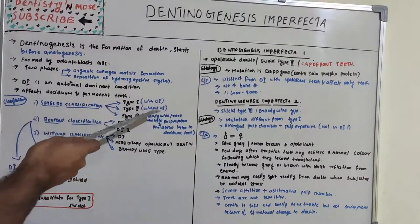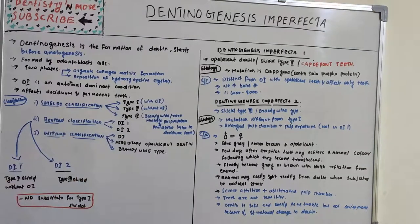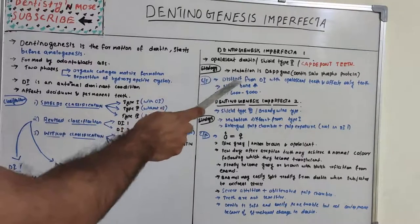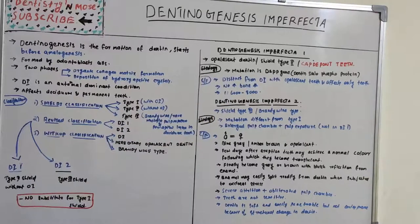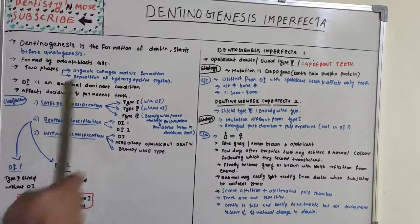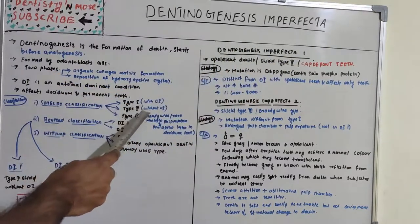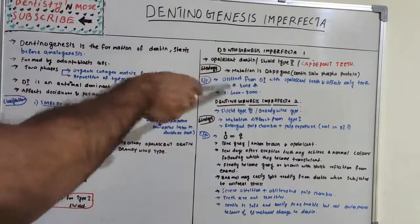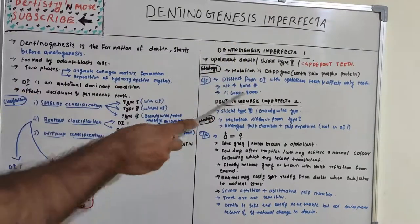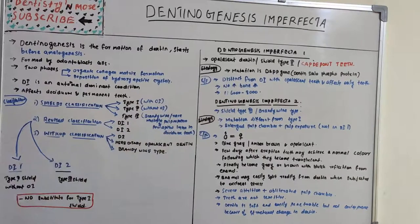Dentinogenesis imperfecta type 1 (Shields type 2) occurs without osteogenesis imperfecta, so it is distinct from OI — it affects only the teeth, not the bones. There will be no increased bone fracture. The incidence is 1 in 6,000 to 8,000.